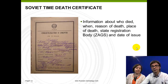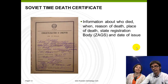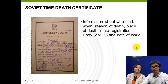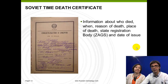The death certificate contains information about who died, when, the reason of death, place of death, the state registration body that issued the certificate, and the date of issue. This covers the most important information from the Soviet era.